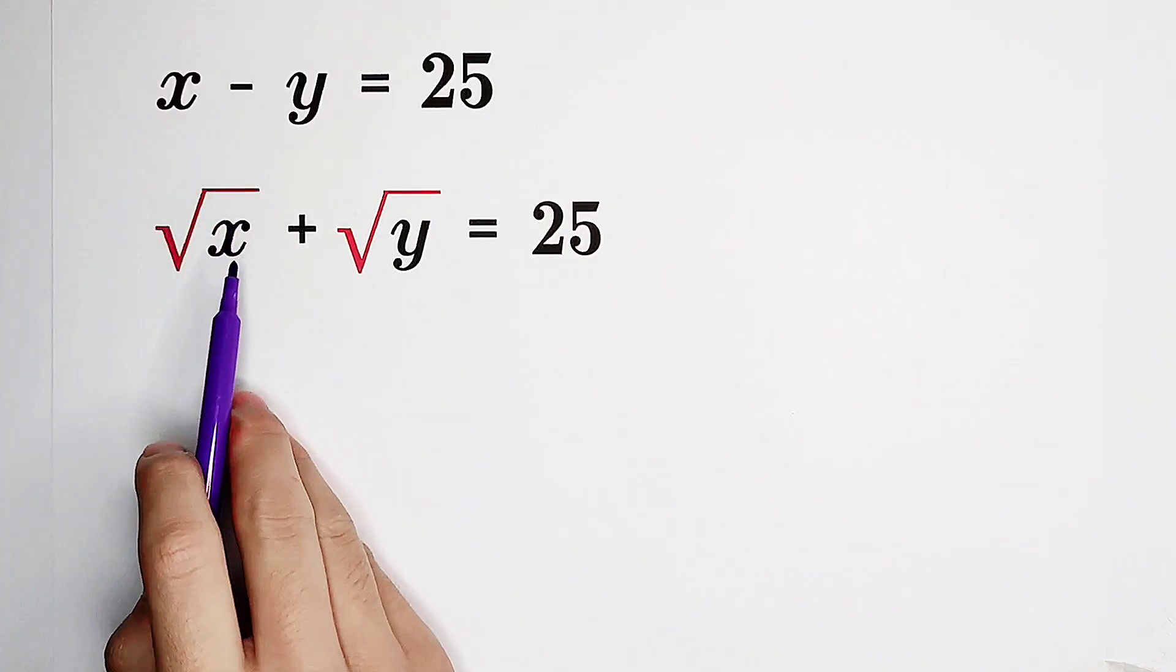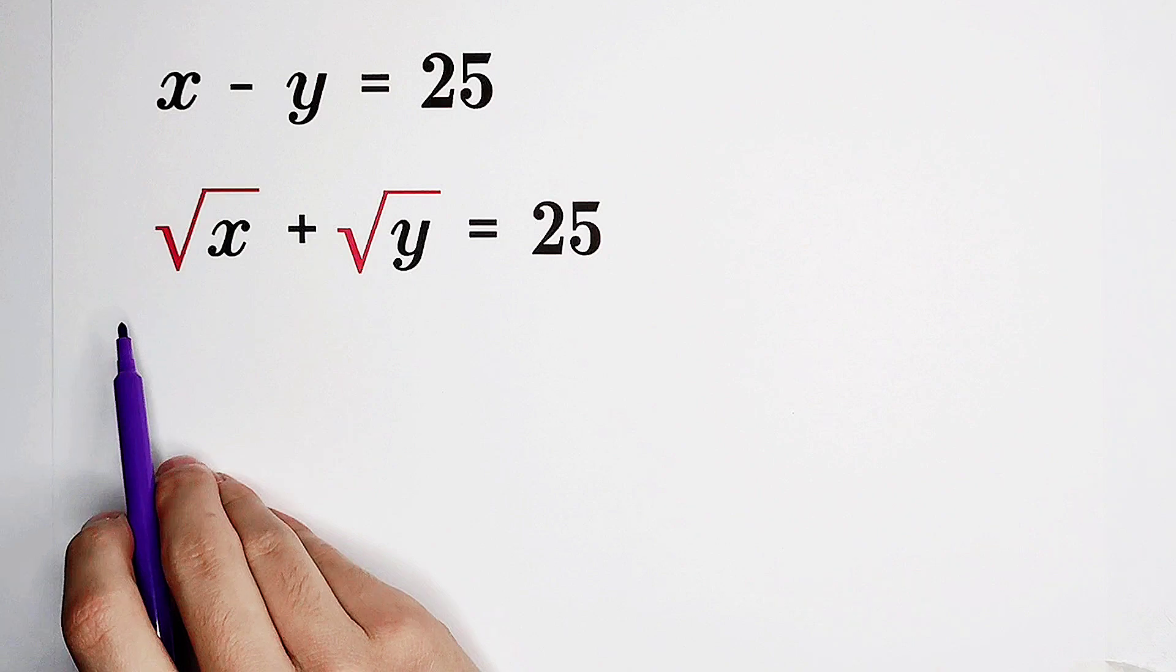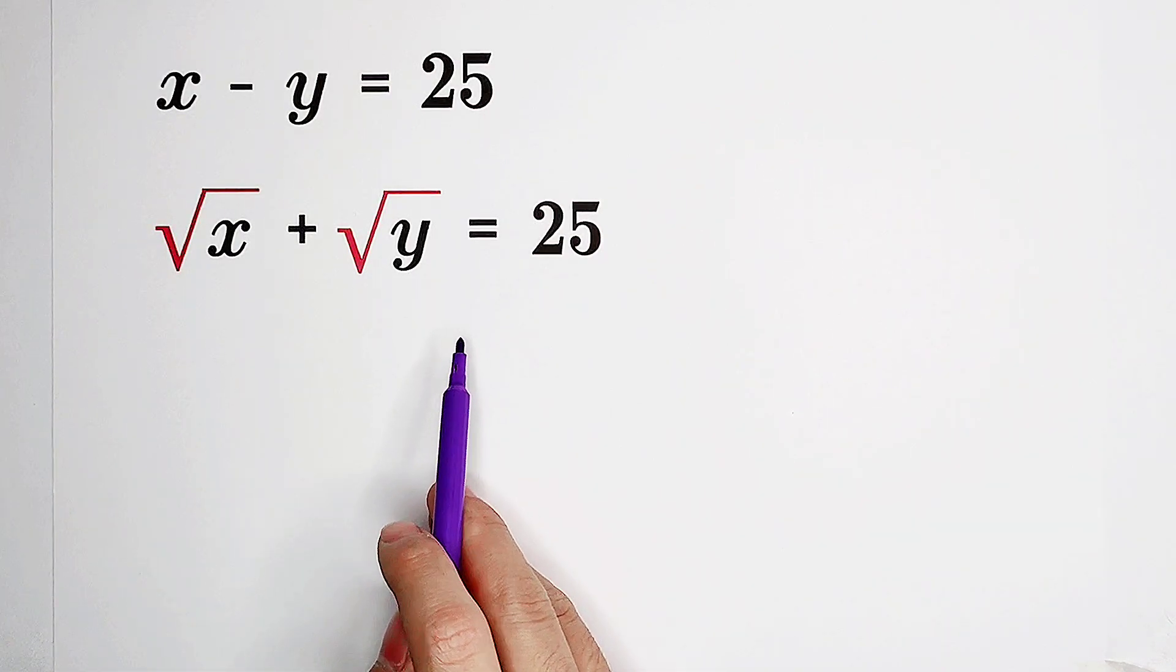Are you able to solve this system of equations? x minus y equals 25, the square root of x plus the square root of y equals 25.